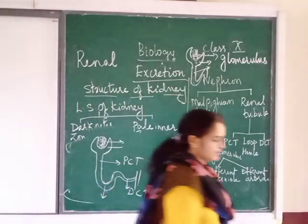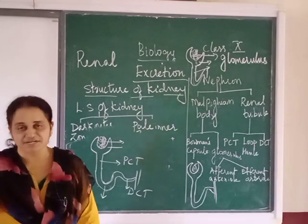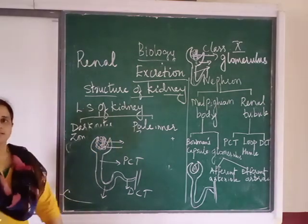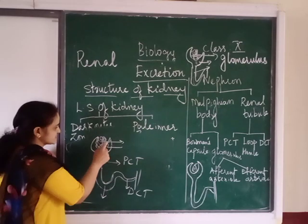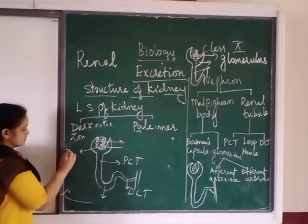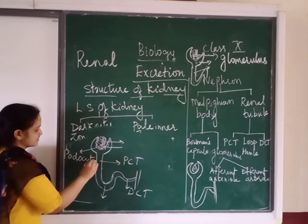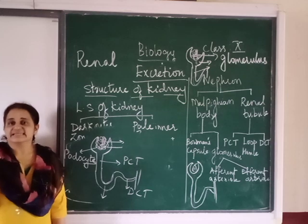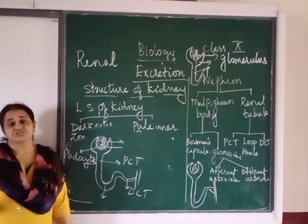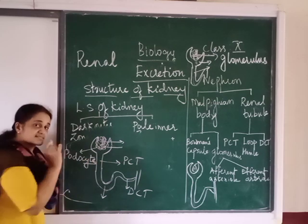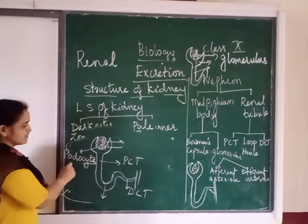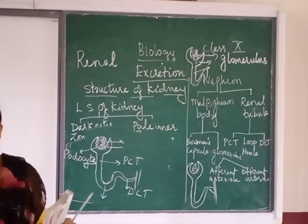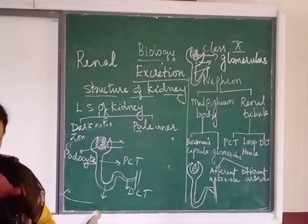We are studying the structure of the nephron because the nephron is the structural and functional unit of the kidney. One important objective to remember: the Bowman's capsule is made up of a single layer of cells. That single-layered cell is called a podocyte. When you hear the suffix '-cyte', it means cell, just as '-logy' means science. Refer to page number 79.